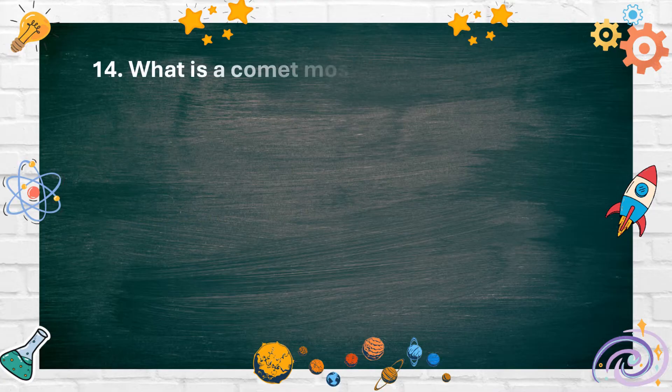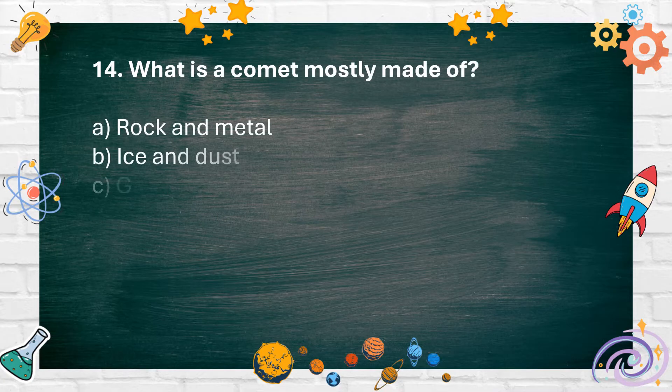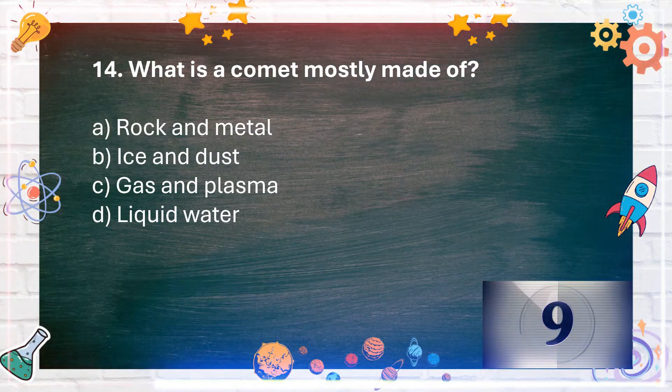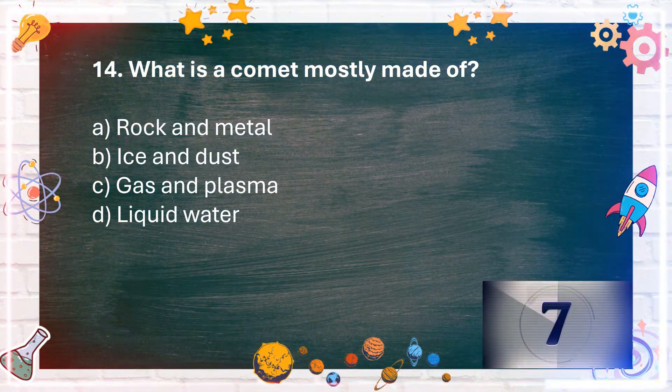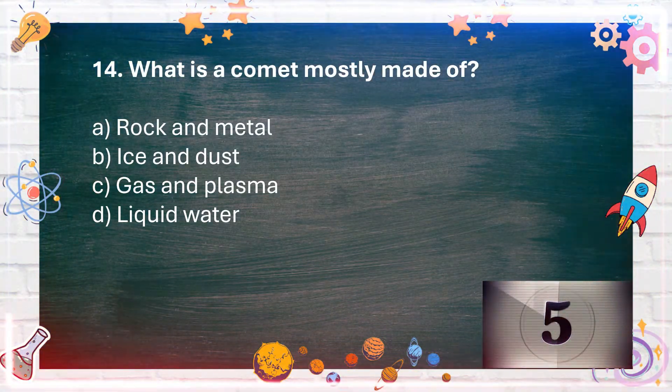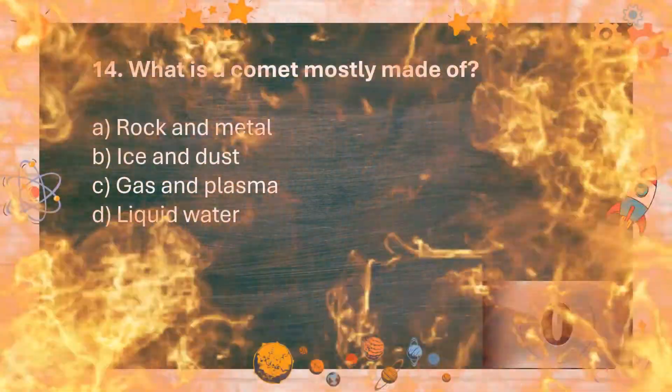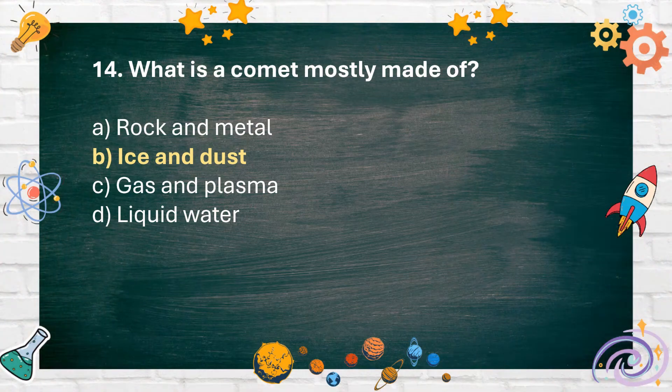Number 14: What is a comet mostly made of? A. Rock and metal, B. Ice and dust, C. Gas and plasma, D. Liquid water. The answer is B. Ice and dust.